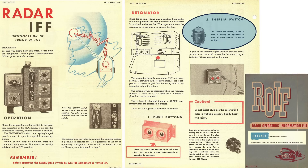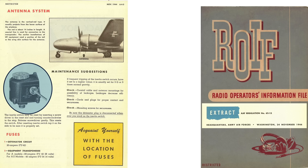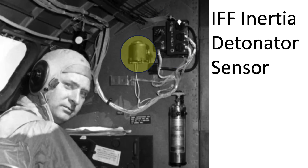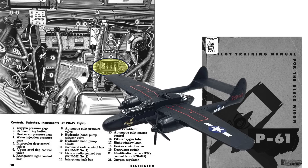The detonator will explode if the two buttons located in the safety box are pushed simultaneously. It is also activated if the inertia switch's forward load factor threshold is exceeded. Another view of the inertia detonator and the IFF antenna's location on a B-29 is shown. The IFF control box is located in the radio operator station in the B-29, and mounted in the B-17's radio compartment. The inertia detonator location is also shown for the Black Widow, along with the IFF destructor push-button safety box.